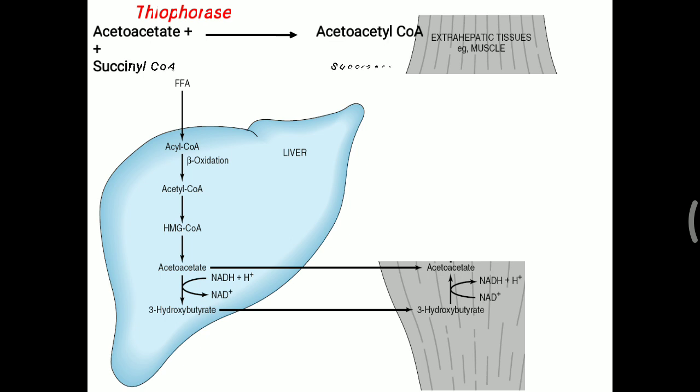Acetoacetate is metabolized with the help of thiophorase, an important enzyme also called CoA transferase. It converts acetoacetate into acetoacetyl-CoA by transferring CoA from succinyl-CoA to acetoacetate, producing succinate and acetoacetyl-CoA.